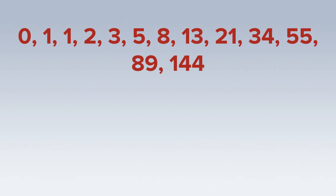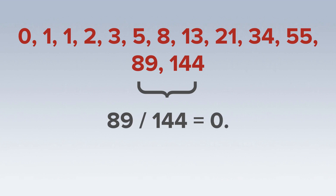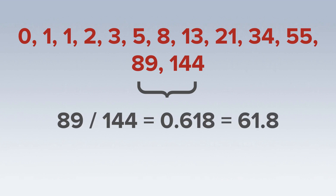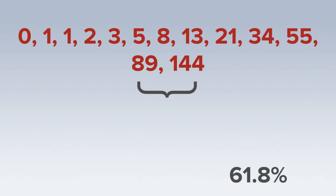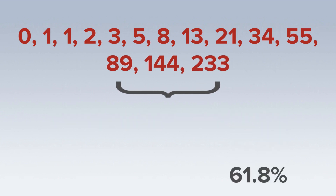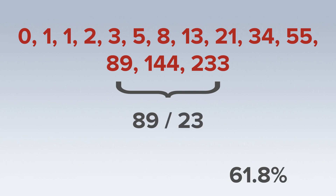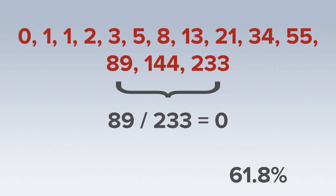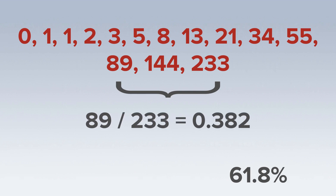Technical analysts use the Fibonacci number sequence to generate percentage values. Dividing a number in this sequence by its successor will result in 0.618 or 61.8%. Dividing a number by the number two places after will result in 0.382 or 38.2%.